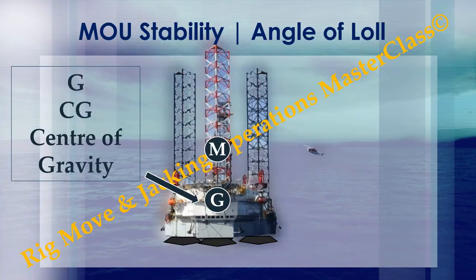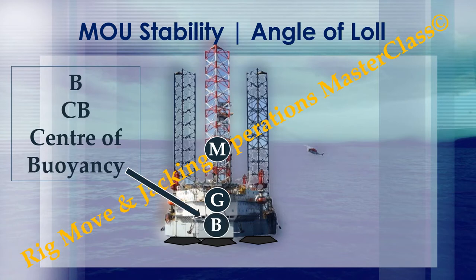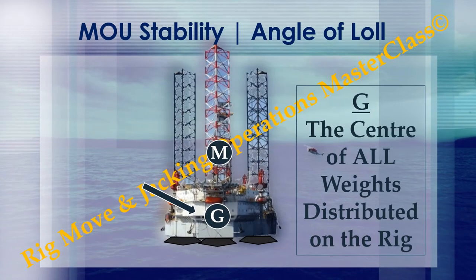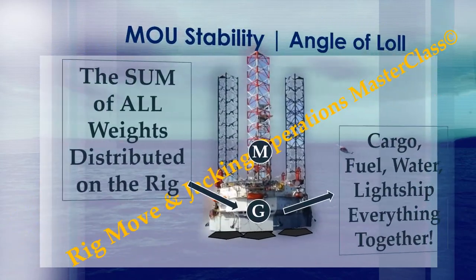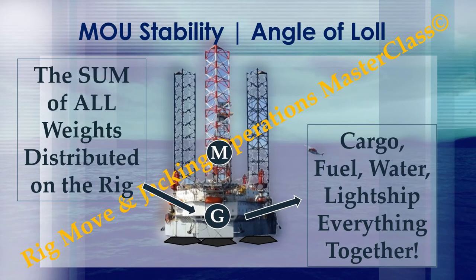G — CG — center of gravity. B — CB — center of buoyancy. G is the center of all weights distributed on the rig: the sum of all weights including cargo, fuel, water, lightship, et cetera — everything together.